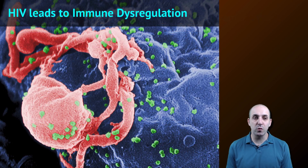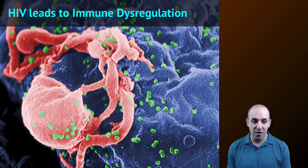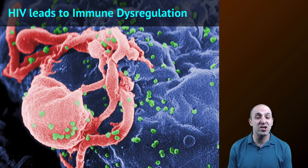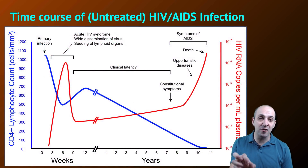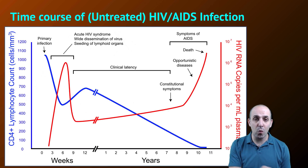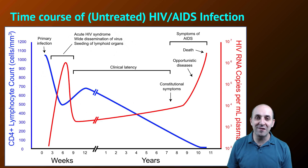As we wrap up our immune system discussion, we should pause to talk about how HIV causes immune dysregulation. This image shows a scanning electron micrograph of HIV viruses emerging from the surface of a helper T cell — and that's what HIV does. HIV infects and kills helper T cells, which is a real problem for our immune systems, as helper T cells are the crucial link between the acquired immune system and the innate immune system. Without helper T cells to present antigens, we do not develop immunological memory and are much more susceptible to disease.